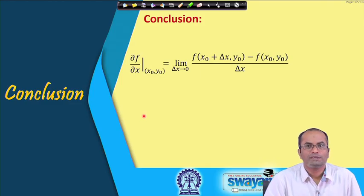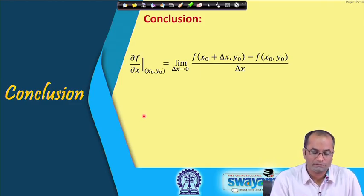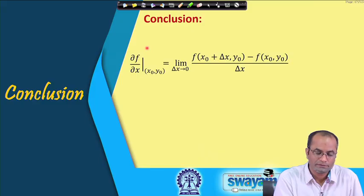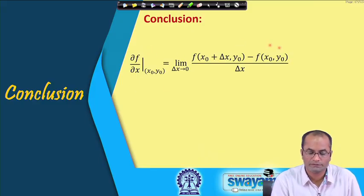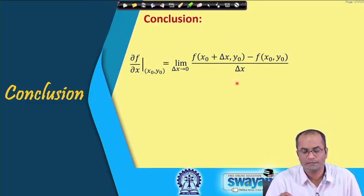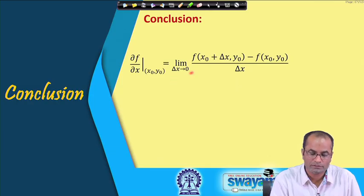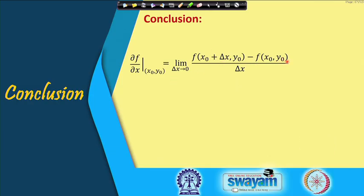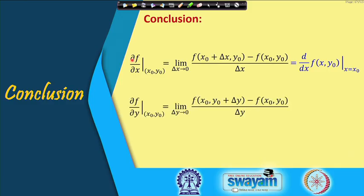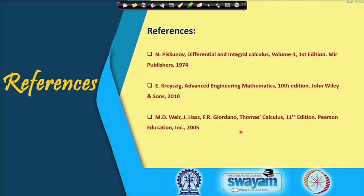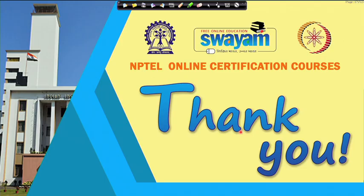So what we have learned today, which will be used in following lectures, is the definition of partial derivatives. Using the increment with respect to one variable and taking the limit of the quotient, if this limit exists we call it the partial derivative with respect to that variable. The same applies for the partial derivative with respect to y. These are the references used for preparing this lecture. Thank you very much.